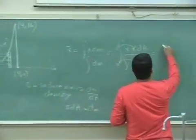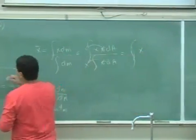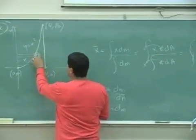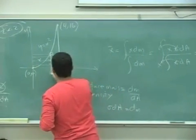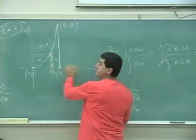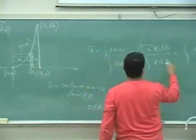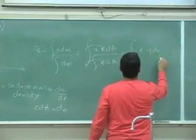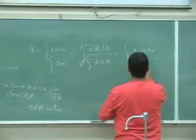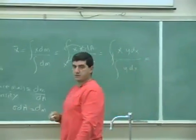So what's going to be the dA of that? It's going to be y times dx. The height times the width. So it's going to be integral x y dx over integral y dx.